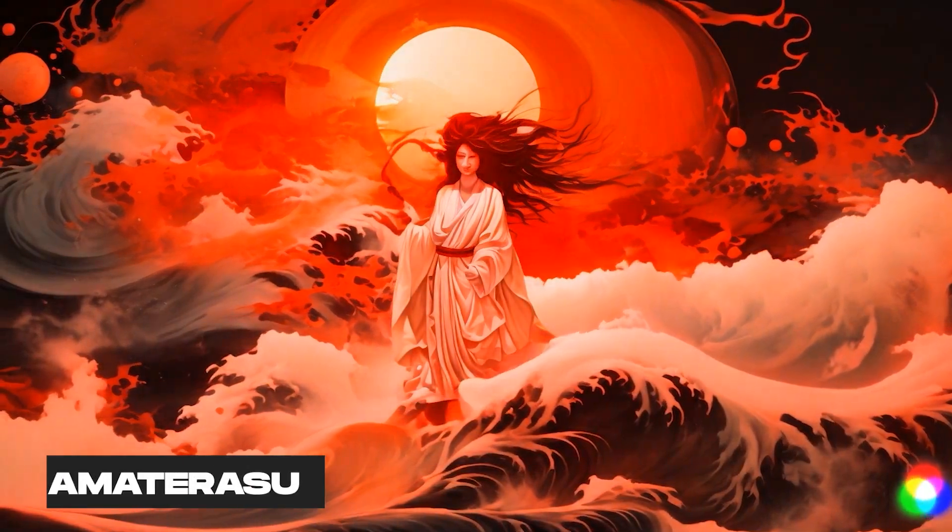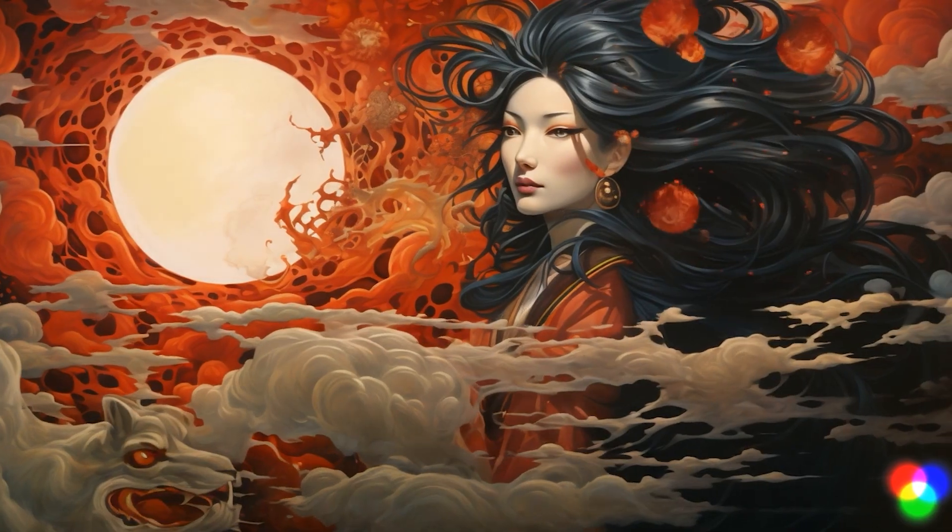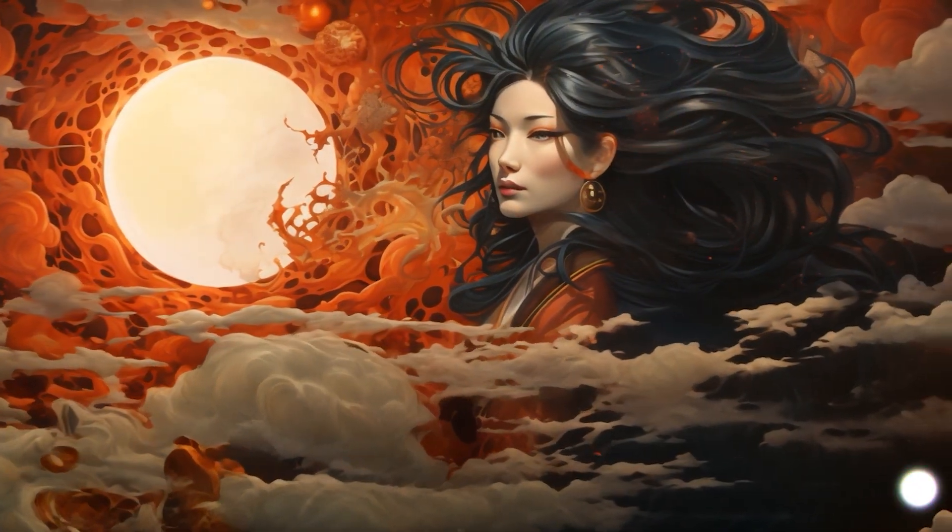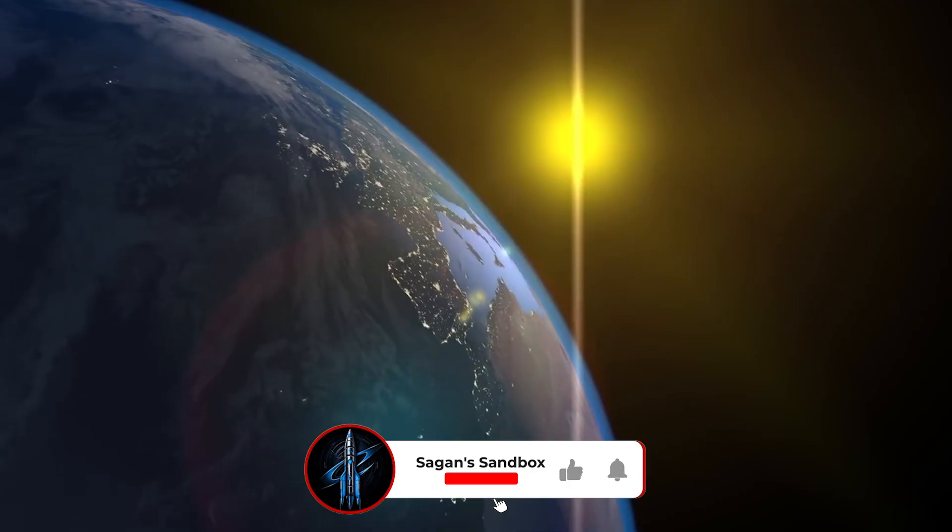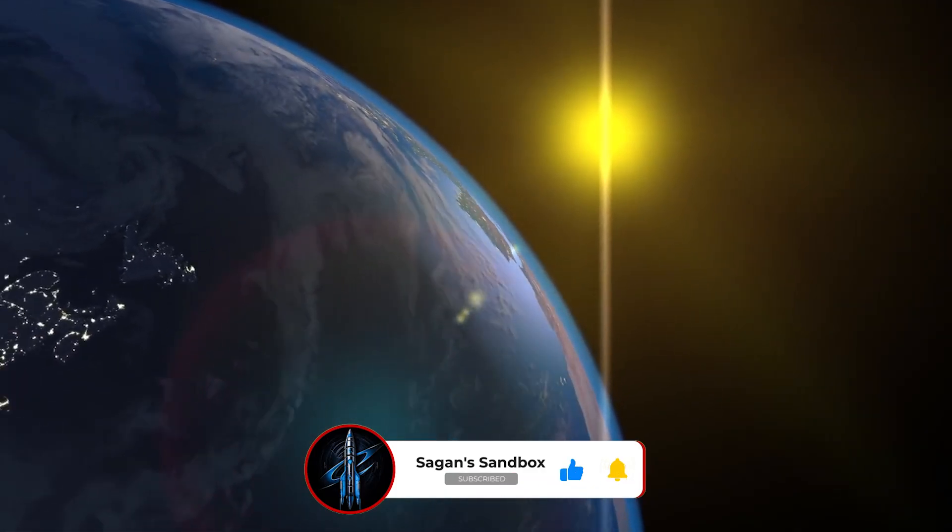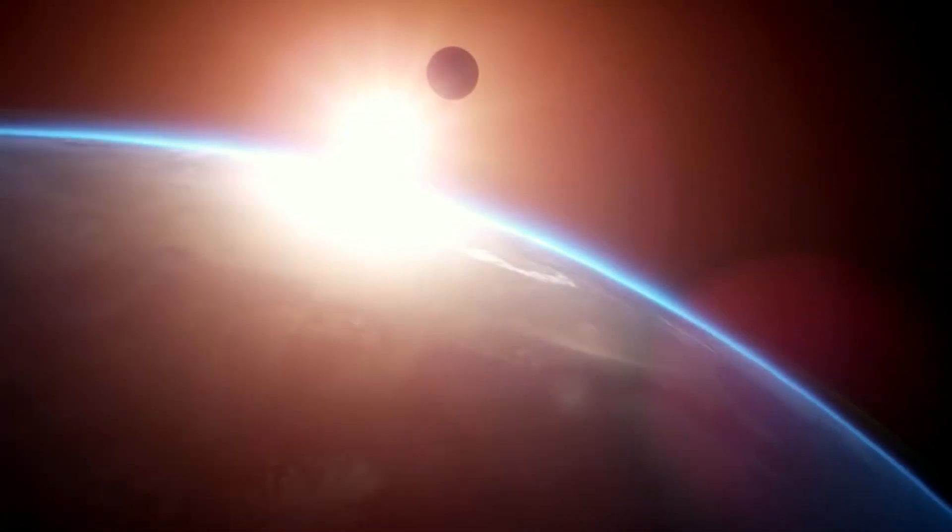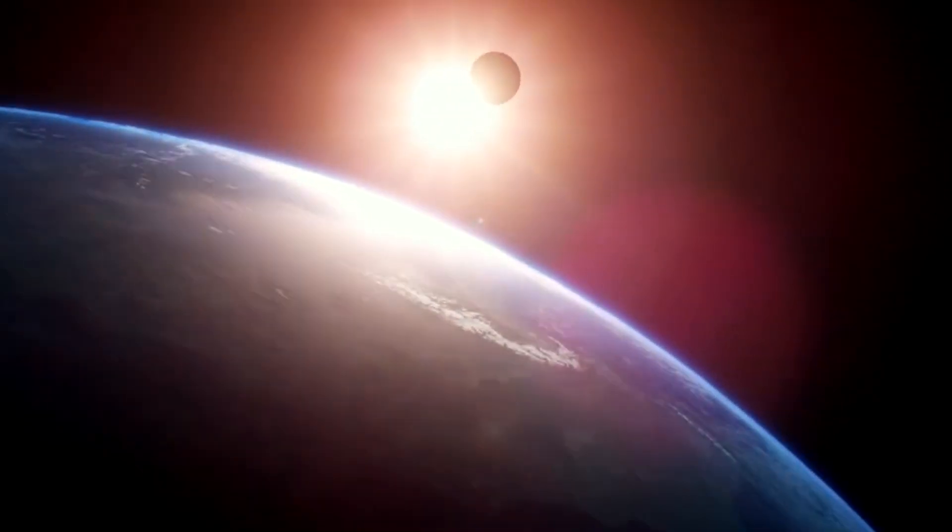And they named it Amaterasu, after the sun goddess who is supposed to have made Japan in the Shinto religion. But why Amaterasu? Well, because the particle came from the direction of the sun. Or at least from the same spot in the sky where the sun was hanging out at the time of the detection.